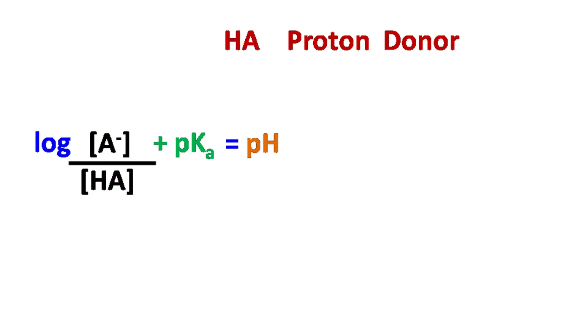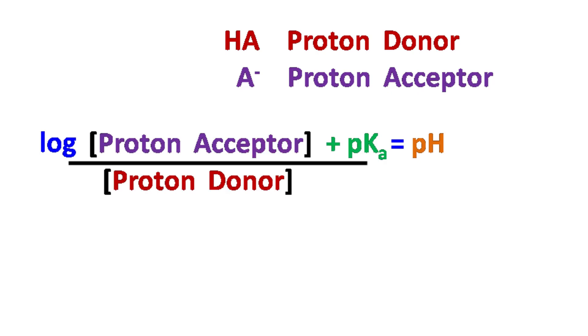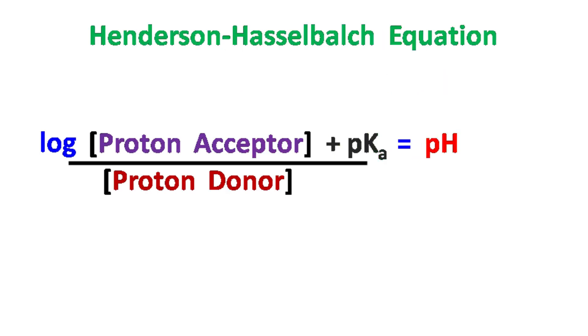HA is the acid which ionizes in aqueous solution to give H+ ions and hence is called proton donor. Whereas A- is the proton acceptor or the conjugate base of the acid. This equation so formed is called Henderson-Hasselbalch equation.